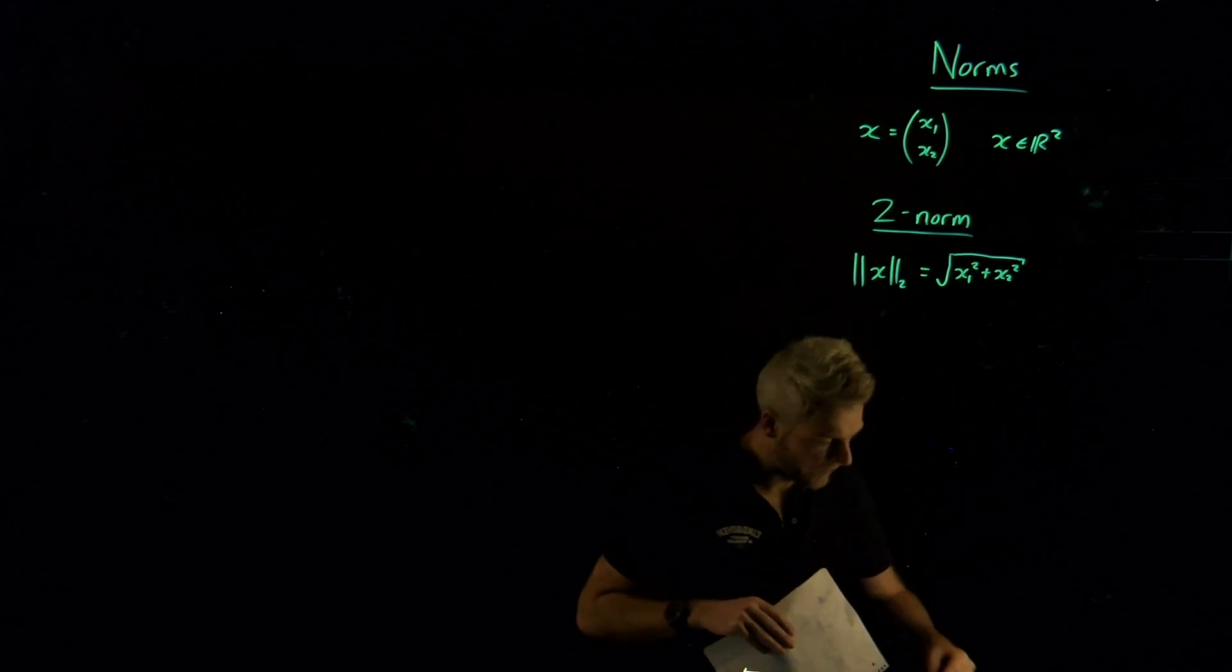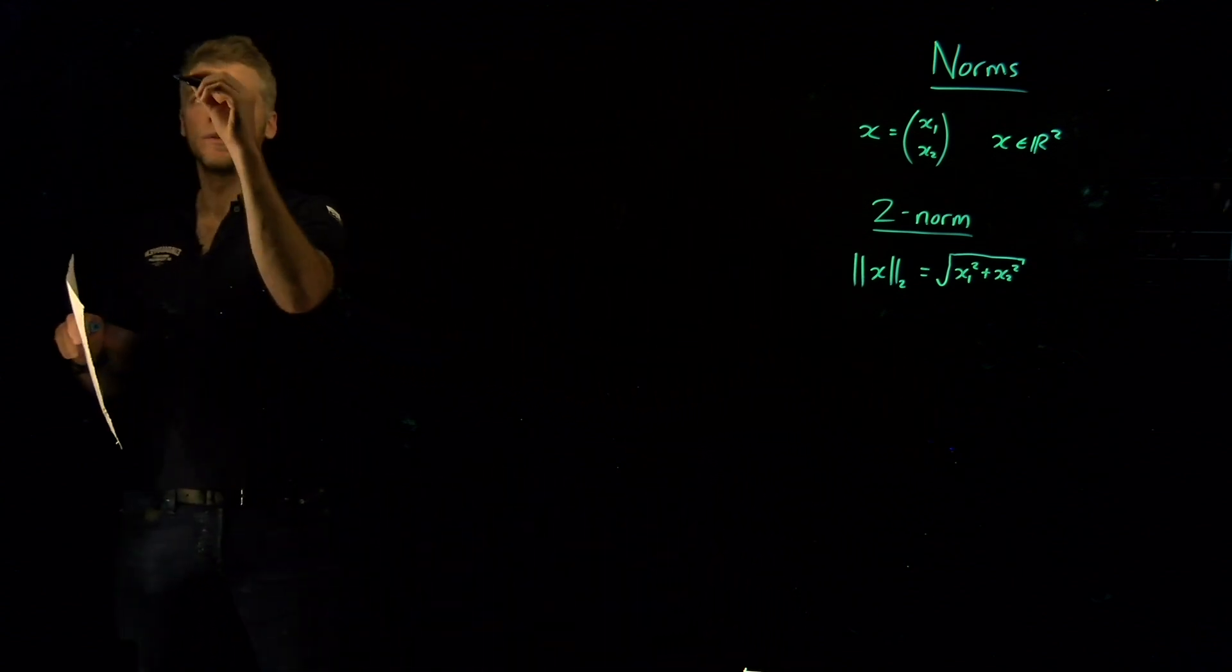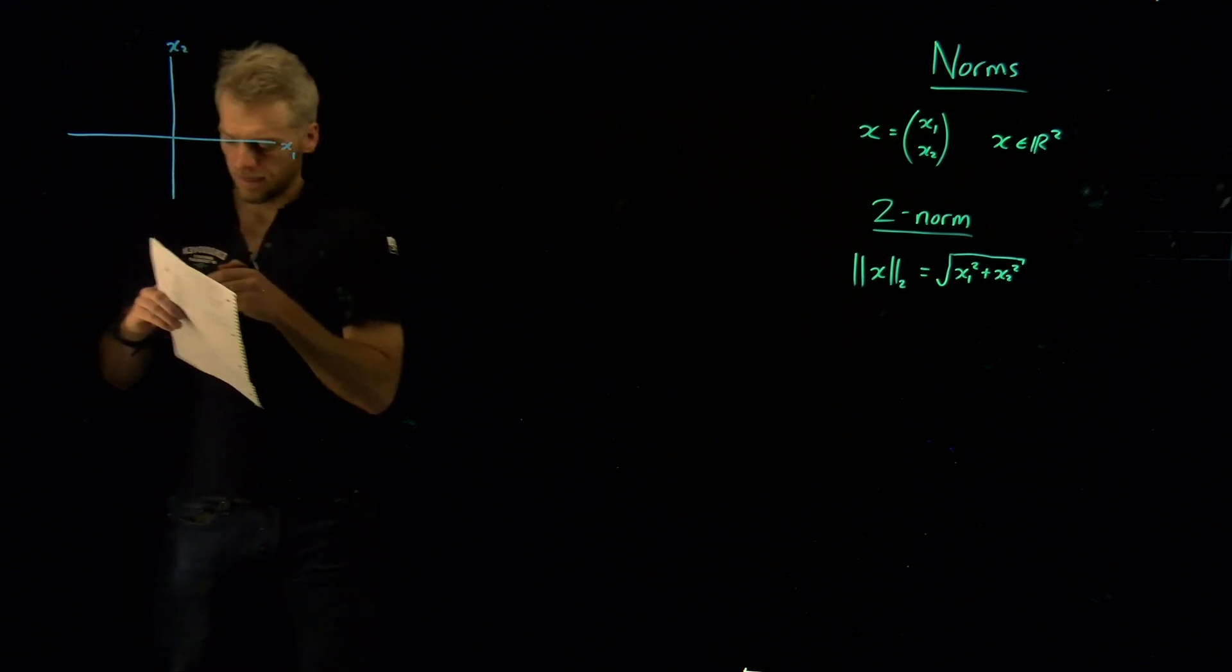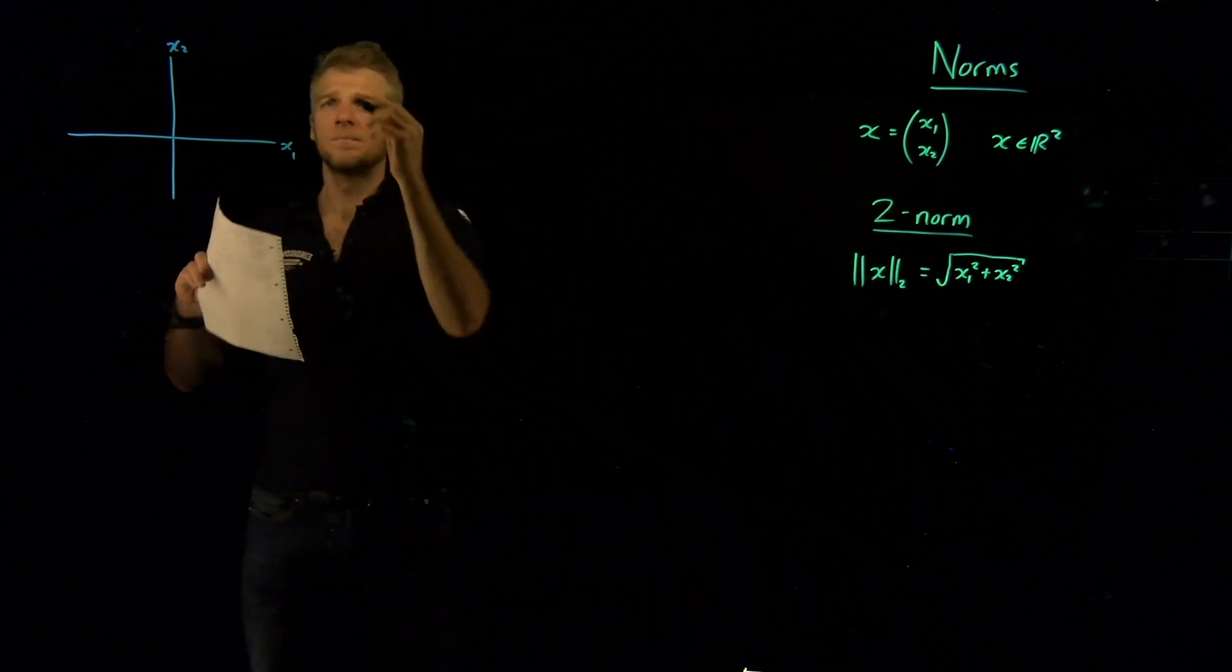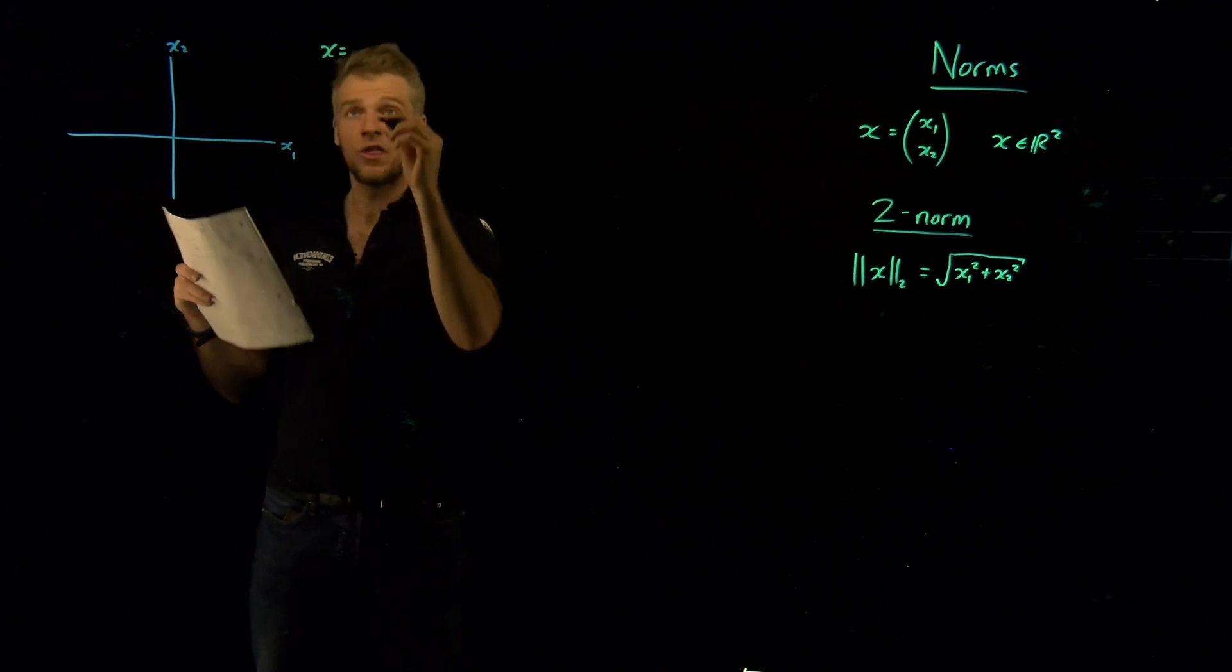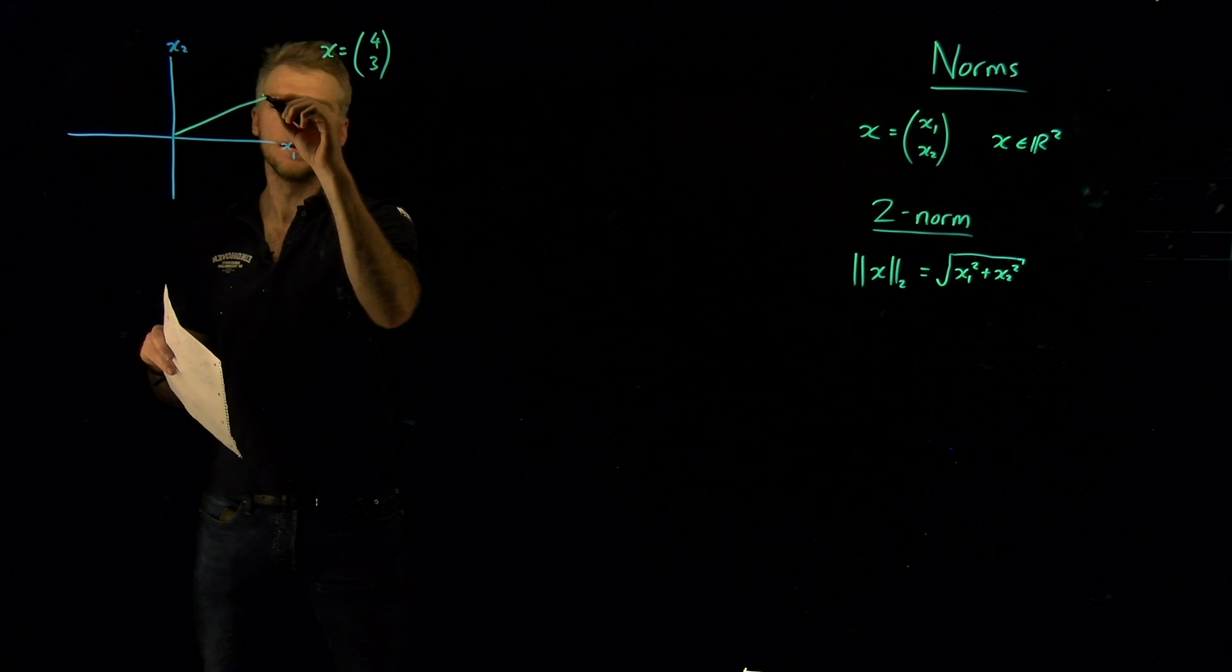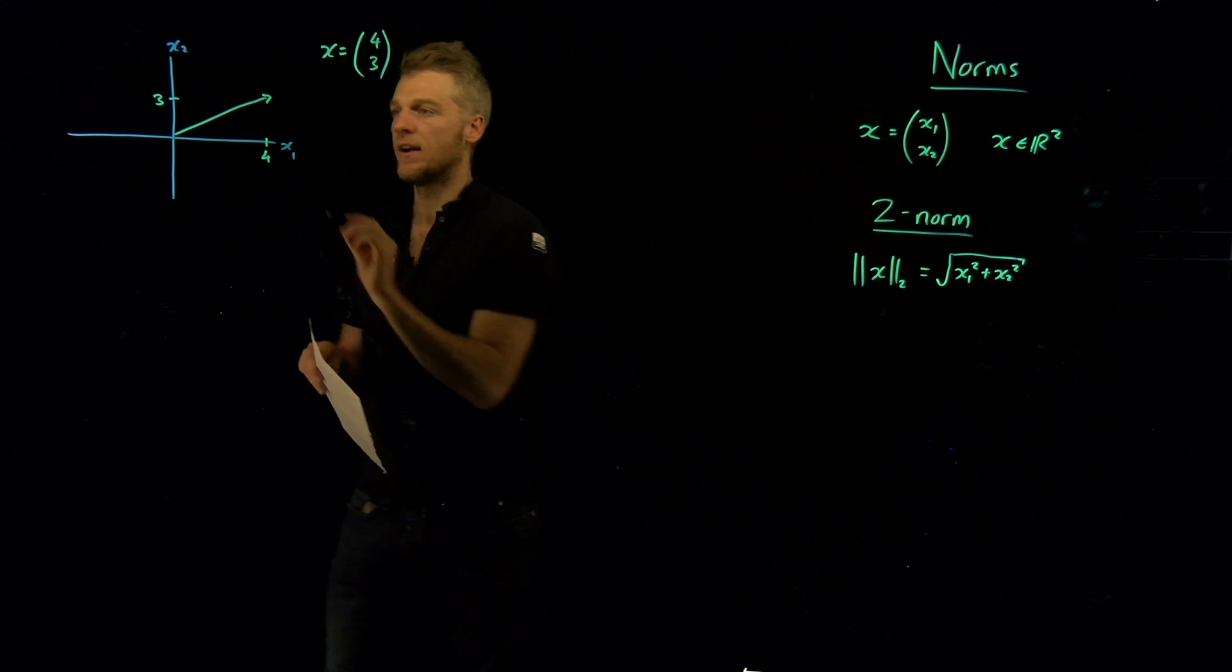But in order to get a feeling for what this means, I think we should probably plot it over here, or at least a simple example. So let's say we have x1 here, and let's say we have x2 here. And let's cover a fairly simple case where our x vector is equal to, let's say, 4, 3. So in that case, we have a vector which looks a little bit like this. That means that this point here is 4, and this point here is 3. That's our vector x right here.